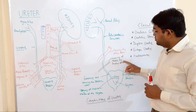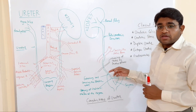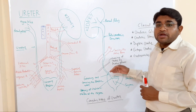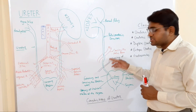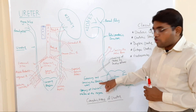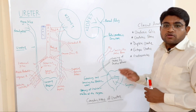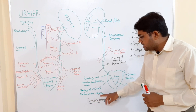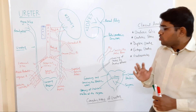The third constriction: in males it occurs when the ductus deferens crosses the ureter from the anterior side; in females it occurs when the round ligament of the uterus crosses the ureter. The fourth constriction is when the ureter enters and courses through the bladder wall.